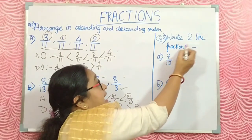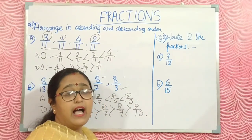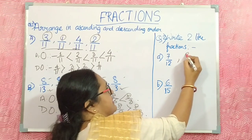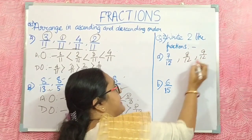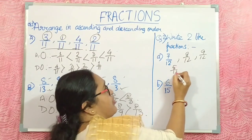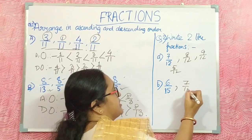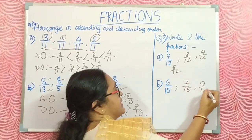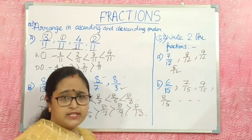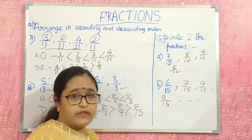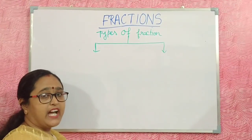Write two like fractions — like fractions means the denominator is the same. You can write anything: 8/12, 9/12, 5/12. And for another: 7/15, 9/15, 8/15 — the denominator is same, so these are like fractions. Now I discuss another type of fraction.